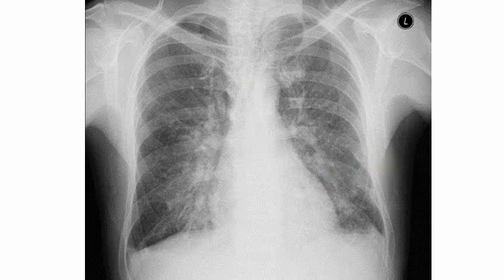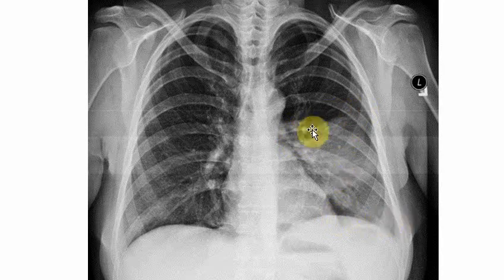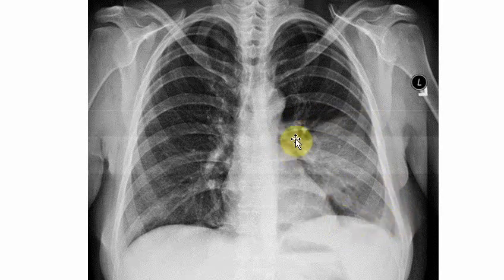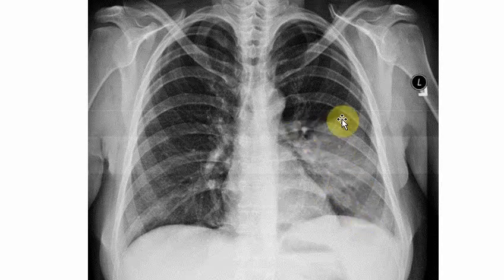The next picture shows a normal right side of the lung, but on the left side there is a very obvious consolidation — one big, confluent, homogeneous consolidation with an air bronchogram visible. It looks almost like the whole lobe is consolidated. This turned out to be lobar pneumonia. In bronchopneumonia you have patchy opacities, while in lobar pneumonia you have a big homogeneous consolidation.